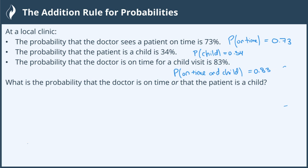What is the probability that the doctor is on time or that the patient is a child? So when I read these probability problems, being that you're not always going to be told what section it comes from, you need to be able to read it and determine which rule it is. And whenever you see the or case, we know that it's the addition rule.